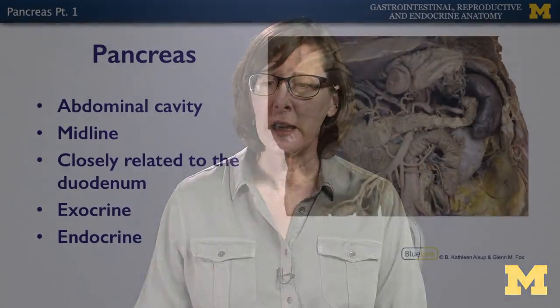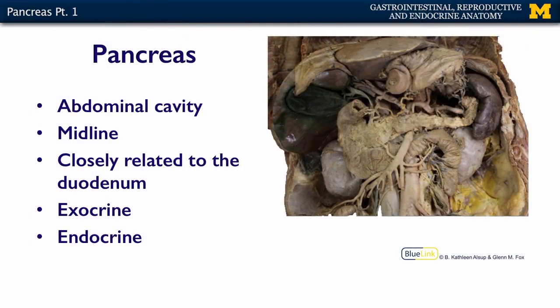The pancreas is found in your abdominal cavity, and you've covered most of the pancreas anatomy in the GI MOOC with Dr. Fox. What I want to point out is that the pancreas has both an exocrine and an endocrine function. The tail of the pancreas tickles the spleen over here, and the head of the pancreas is embedded within the curve of the duodenum, which is right here.